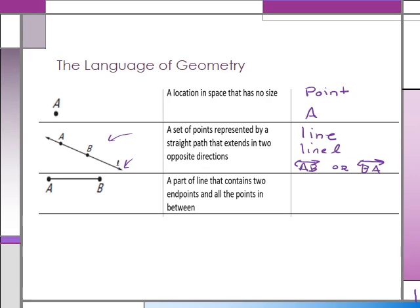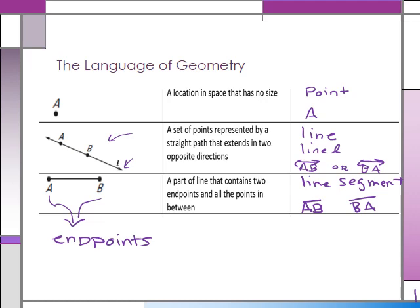A part of a line that contains two endpoints and all the points in between is called a line segment. We name it with the two endpoints — using A and B with a segment symbol (no arrows) underneath. We could name it AB or BA. A and B are the endpoints, and everything in between are the points of the segment.